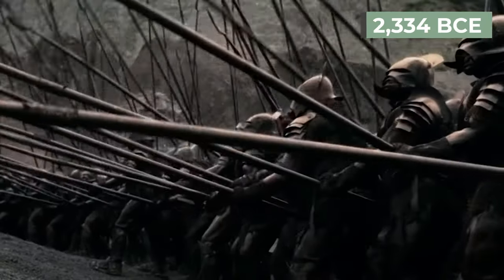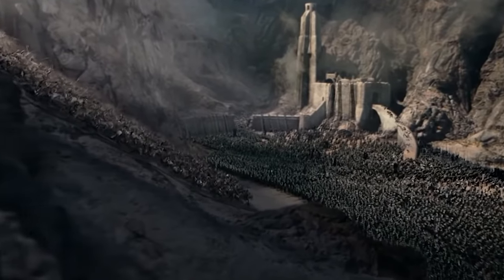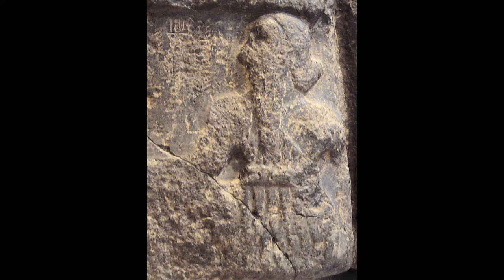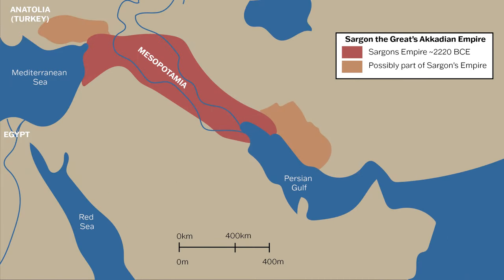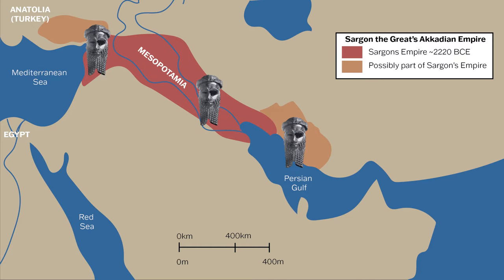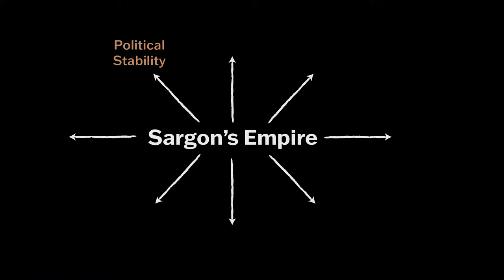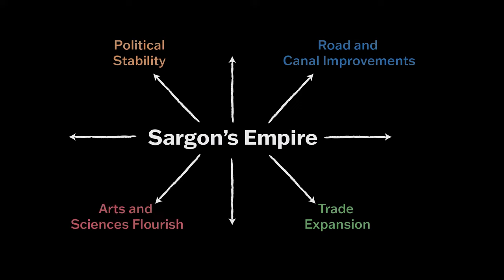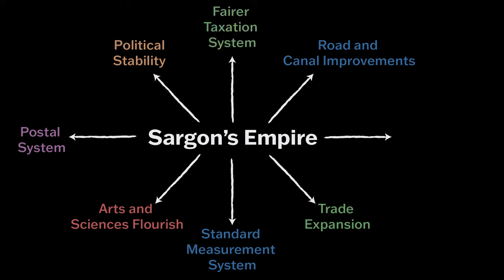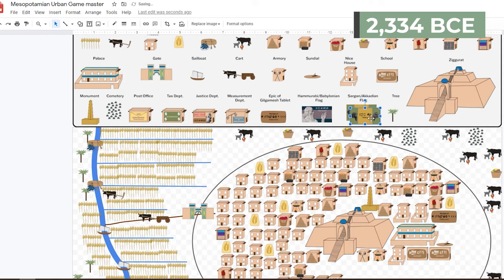It's 2,334 BCE and things have taken a drastic turn — your city-state has been invaded. Sargon the Great has defeated all the Sumerian city-states, bringing Mesopotamia, areas on the Mediterranean coast, and Turkey into one Akkadian Empire. To maintain control of his new empire, Sargon set up Akkadian governors and administrators to control the conquered regions. He also made his daughter Enhudwana the High Priestess at Ur, who had considerable religious control — she's actually the first author we know by name. This empire provided stability since the city-states weren't fighting each other anymore. Roads and irrigation canals improved, trade expanded, and the arts and sciences increased. They even created the world's first postal system, complete with envelopes for the clay tablets. More improvements included instituting a standard measurement system, creating a fair taxation system, and constructing new buildings. Hang Sargon's Akkadian flag over the ziggurat.